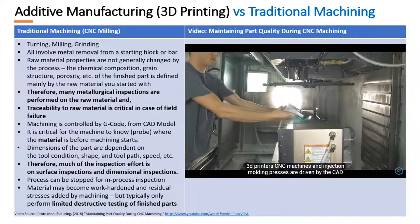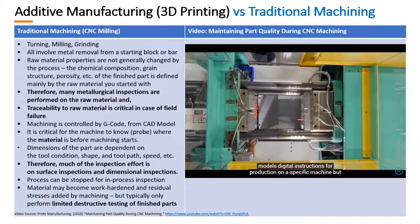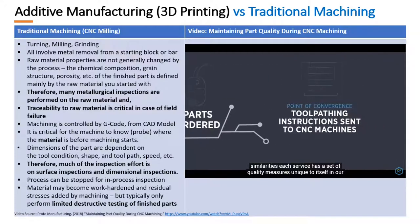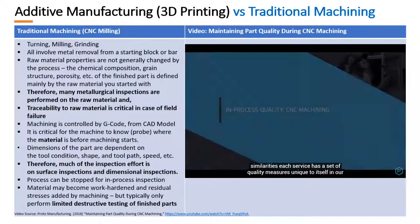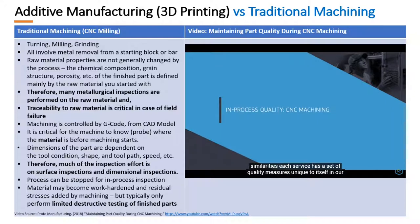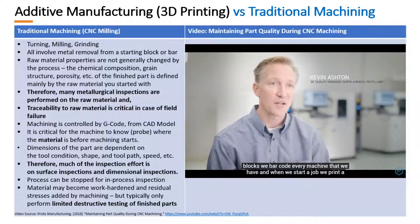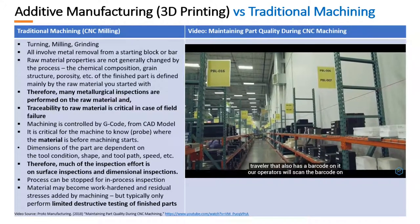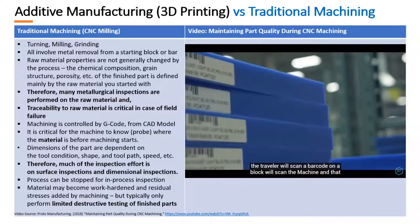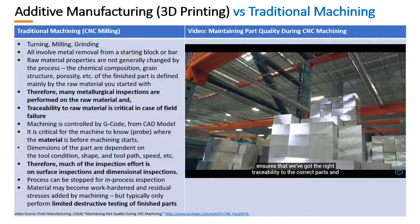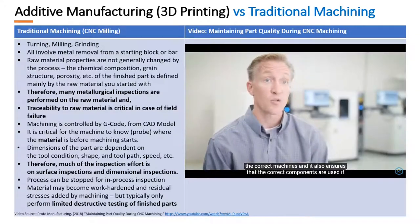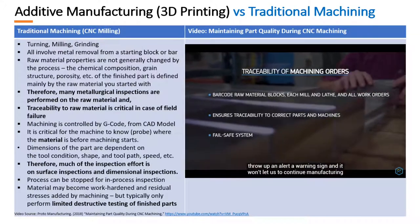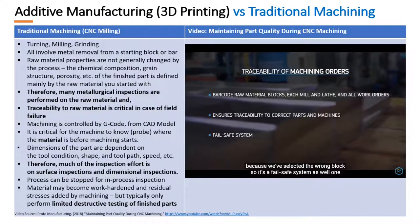3D printers, CNC machines, and injection molding presses are driven by the CAD model's digital instructions. Although our quality systems for molding, machining, and 3D printing share many similarities, each service has a set of quality measures unique to itself. In our machining business, we use a lot of barcodes — we barcode our raw material blocks, every machine we have, and we print a traveler that also has a barcode. Operators scan the traveler barcode, the block barcode, and the machine barcode, ensuring traceability to the correct parts and machines. If an incorrect block of material is selected, the barcoding system throws up a warning and won't let us continue manufacturing — so it's a fail-safe system as well.